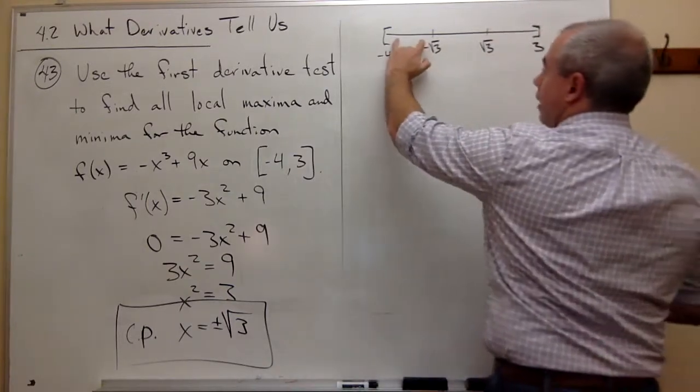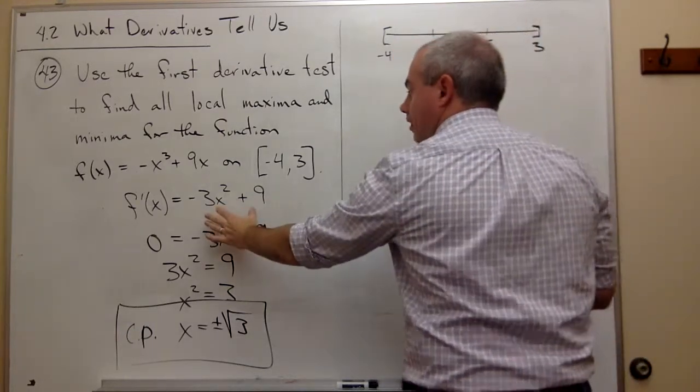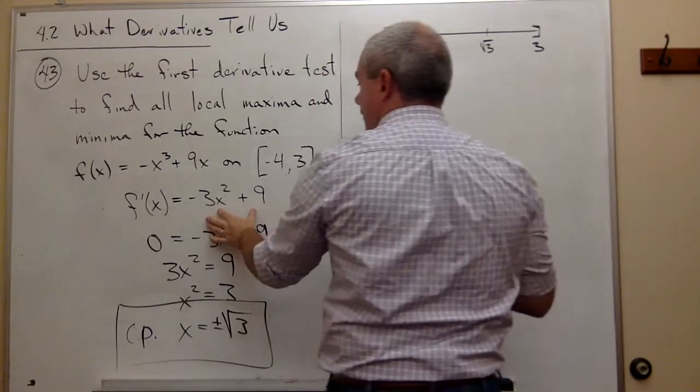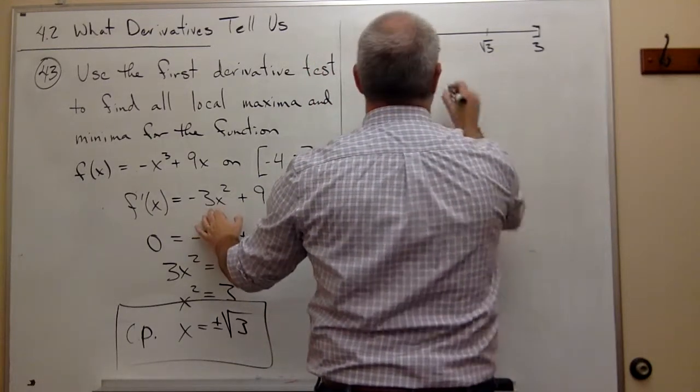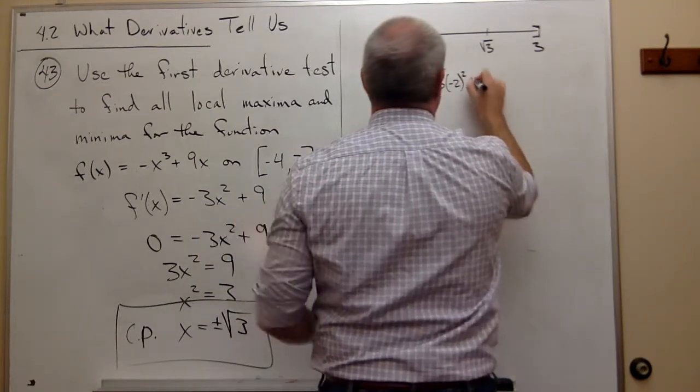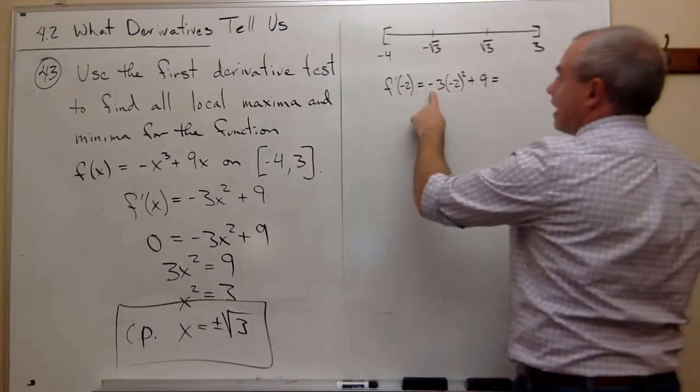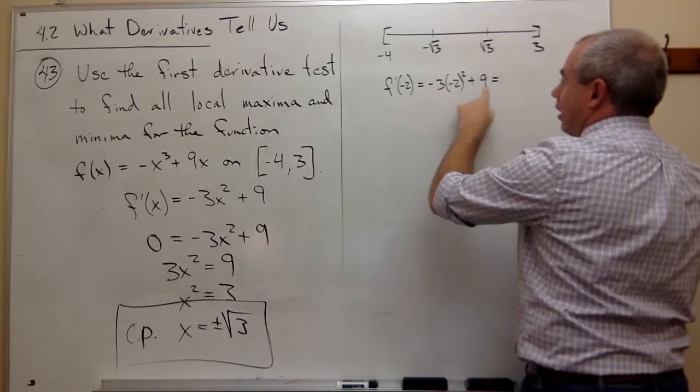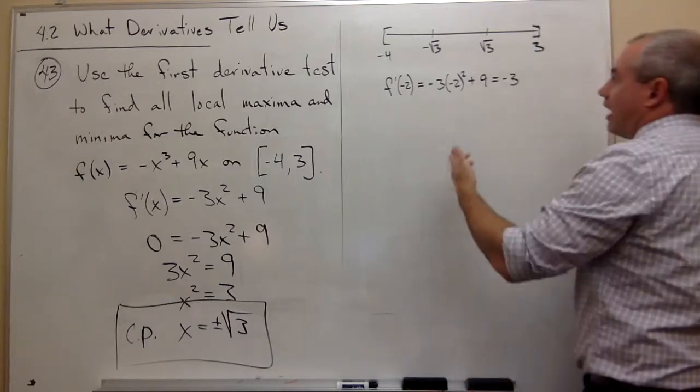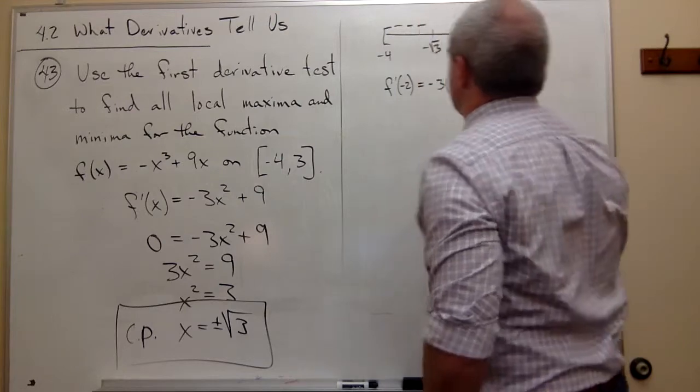So here, I can test something. How about -2 would get the job done. So I want to plug -2 into the first derivative. If I plug in -2, I get -3 times (-2)² + 9. Let's see, this is 4 times -3, that's -12 + 9, which is -3. More importantly, negative. So I get negatives in this interval.